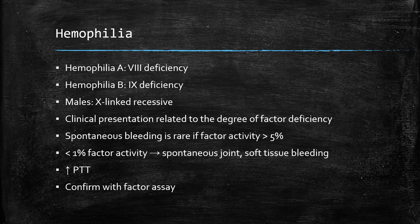Hemophilia comes in two main types: hemophilia A, which is a factor VIII deficiency, and hemophilia B, which is a factor IX deficiency. This is a disease almost exclusively of males since it's an X-linked recessive problem. The clinical presentation is directly related to the degree of factor deficiency, as many patients do have some factor VIII or IX activity. Spontaneous bleeding is very rare if they have factor activity greater than 5%, but if they have less than 1% factor activity, spontaneous joint bleeding, soft tissue bleeding, and even intracerebral bleeding are common. The disease is suspected with a history and an increased PTT, and confirmed with a factor VIII or factor IX assay.